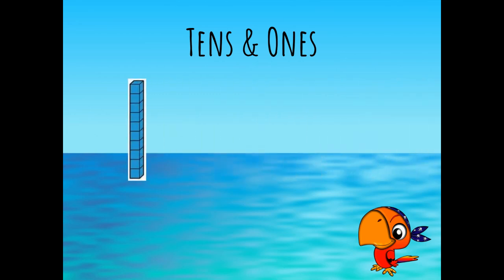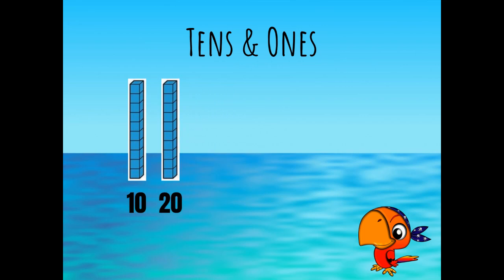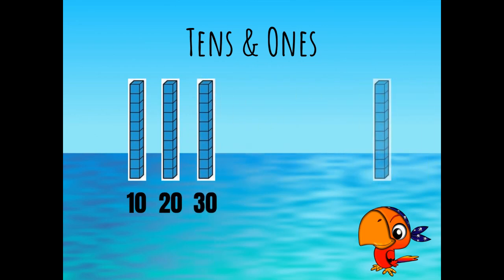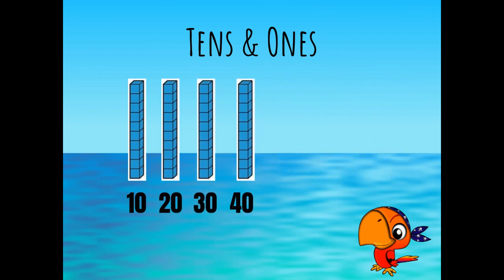Then we used our math tools to build numbers. These are our tens, and when we count them we count by tens, so we would count 10, 20, 30, 40. And these are our ones — our cubes are our ones. So we would count by ones when we count the cubes, and we would count 1, 2, 3, 4, 5.